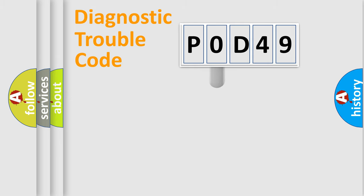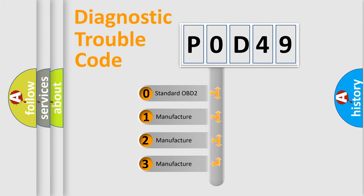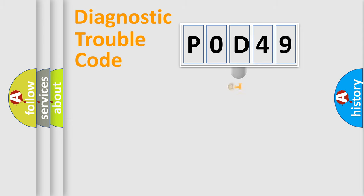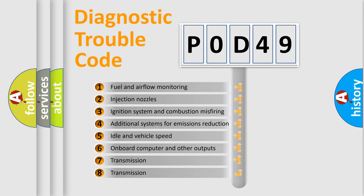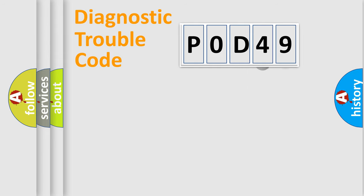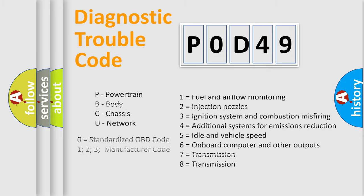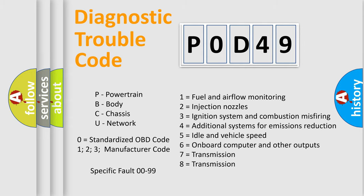This distribution is defined in the first character of the code. If the second character is expressed as zero, it is a standardized error. In the case of numbers 1, 2, or 3, it is a manufacturer-specific error. The third character specifies a subset of errors. Only the last two characters define the specific fault of the group, and this division is valid only when the second character is zero.